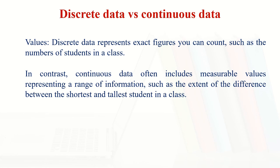Discrete data is a type of quantitative data. The opposite is continuous data, which often includes measurable values representing a range of information. For example, the difference between the shortest and tallest student in the class — that is a range. Another example is the salary of an employee: salary may fall between twenty thousand dollars to forty thousand dollars, and how many employees have a salary within this range. From January to February, February to March, March to April — this is continuous data within a particular range.